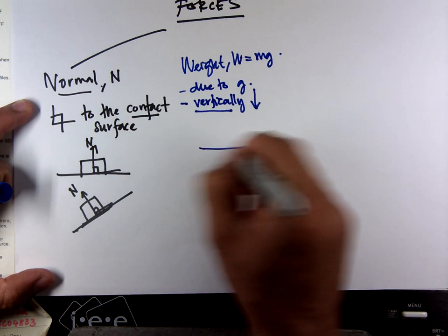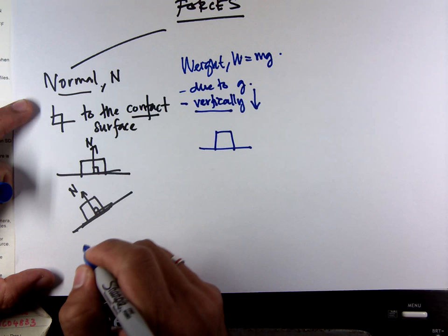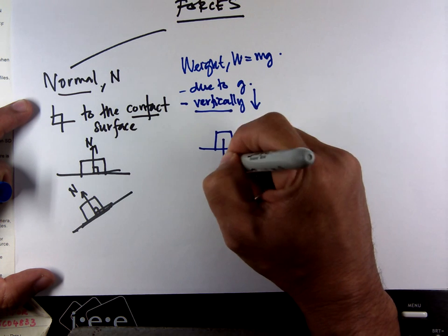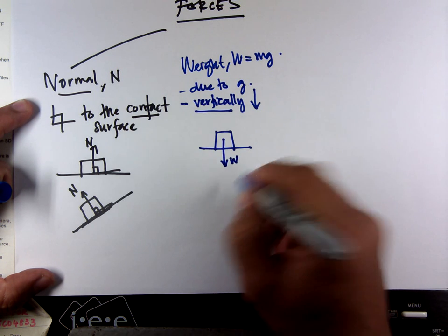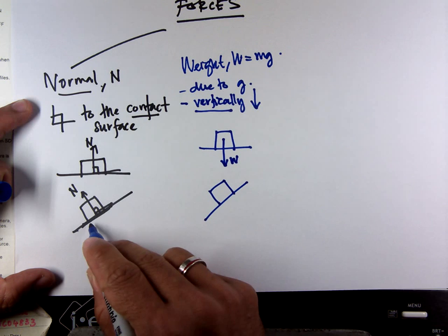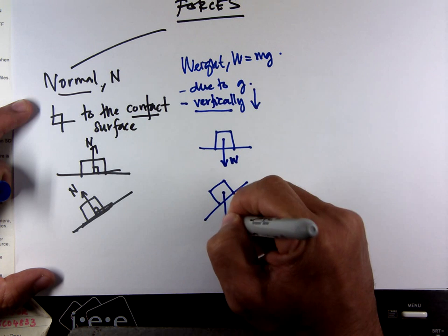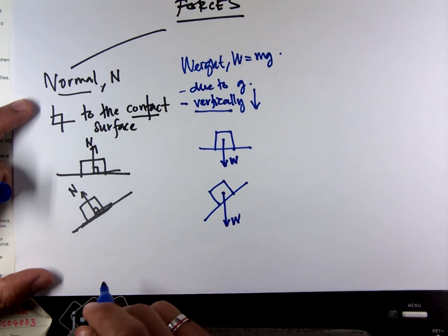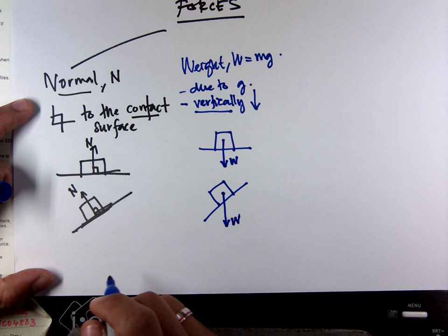We have a situation like this. This is the object. Weight is vertically downwards. Even in an inclined plane, it's not like this. It should be vertically downwards. That is weight.